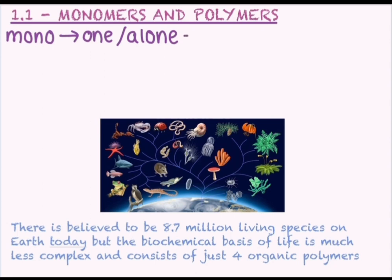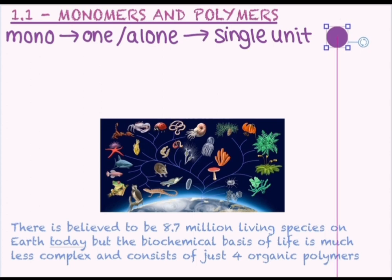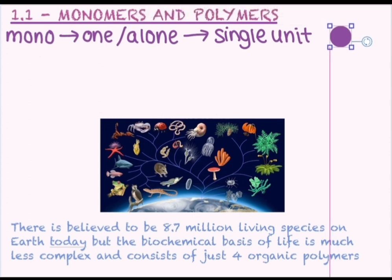Let's break down these terms to see what they actually mean. First up, we have this term mono. When translated from Greek, this gives us the term one or alone. Therefore, we use this word as a prefix in biology to describe the single monomer units that make up large polymers. So here would be a visual representation of what we mean by something existing on its own or as a single unit.